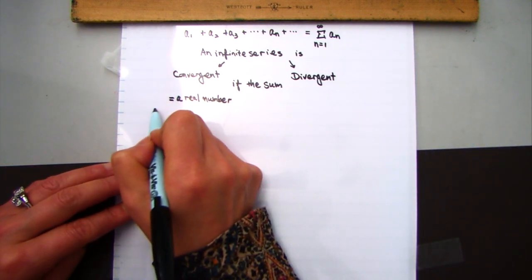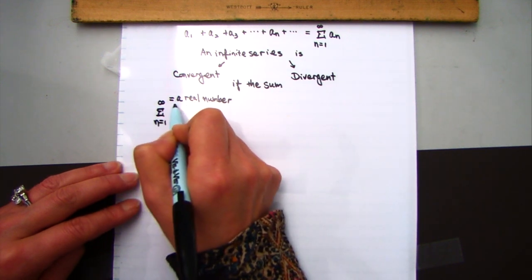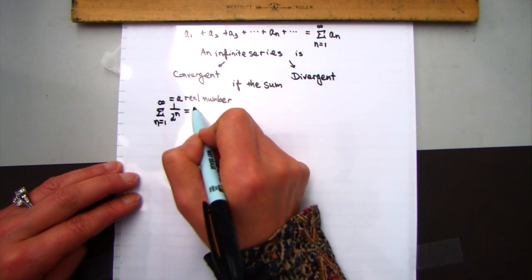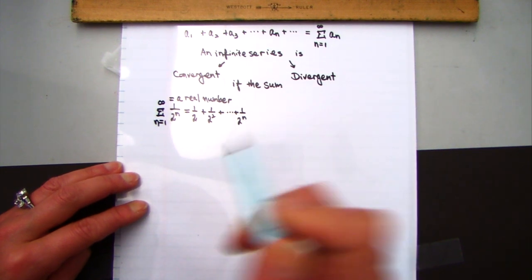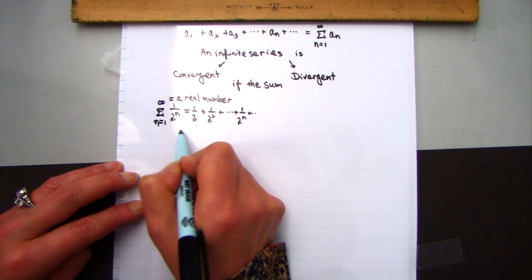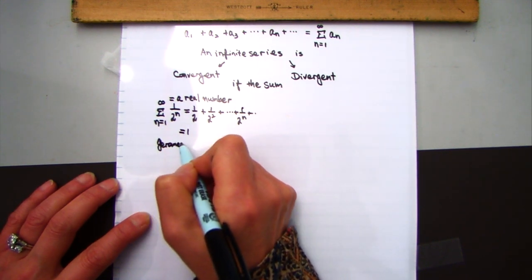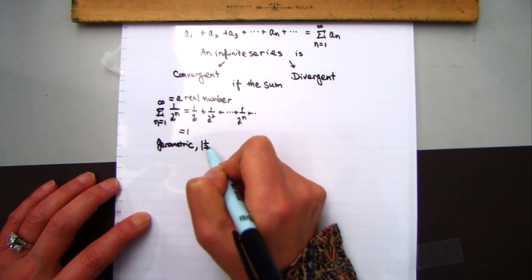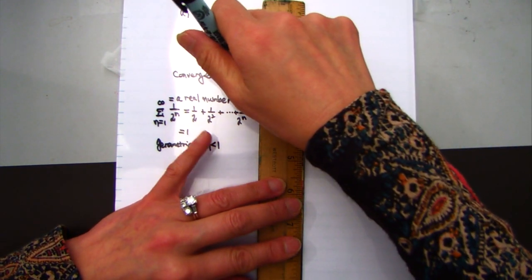For example, Miss P's chocolate geometric series has ratio equals one-half, and opening it up gives one-half plus one-fourth plus one over 2 to the n, and the result equals one. This is a convergent geometric series because the absolute value of one-half is less than one.